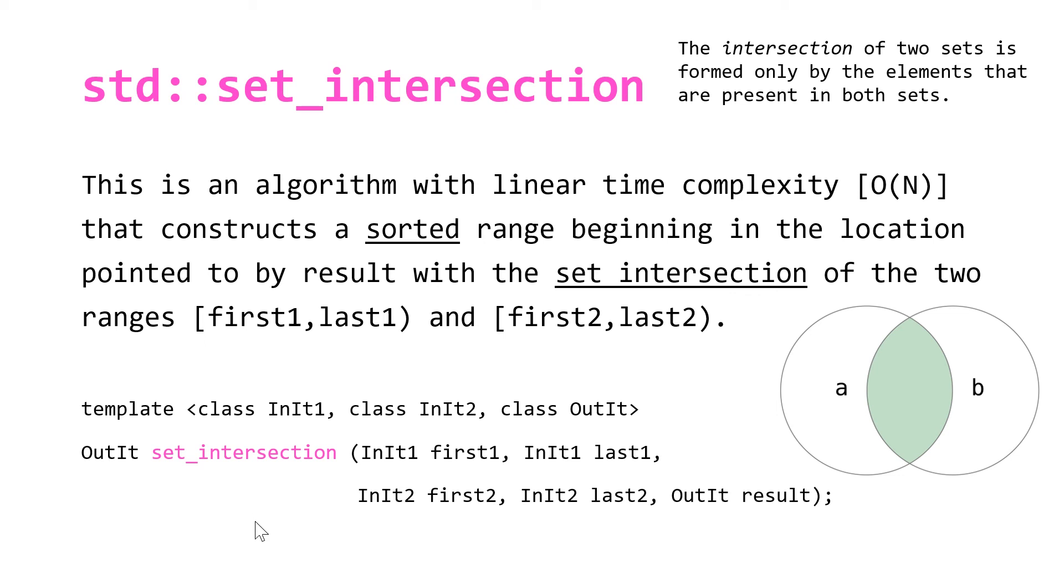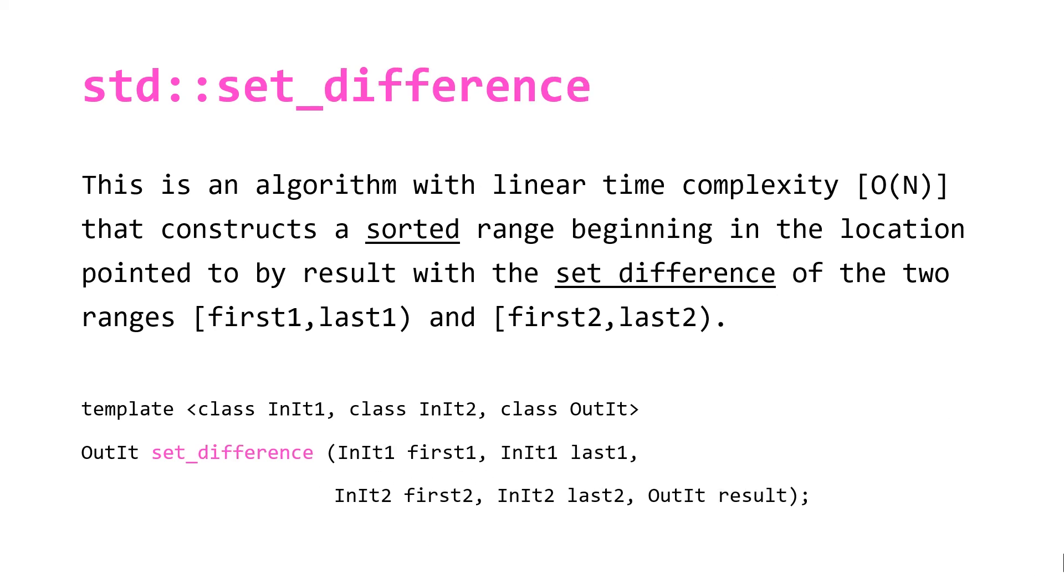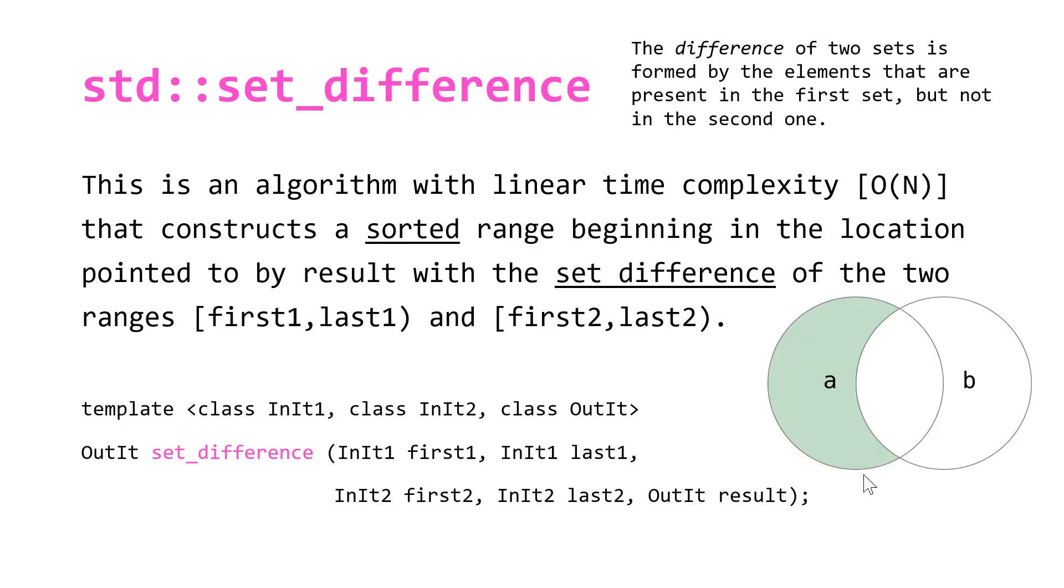Our third algorithm, set_difference, once again has linear time complexity, constructing a sorted range and taking the set difference. The difference of two sets is formed by the elements that are present in the first set but not in the second one. That means whichever elements are present in the range pointed to by [first1,last1) but not in the range pointed to by [first2,last2) are going to be in our constructed new range. This is going to look as follows: the elements in a but not in b.